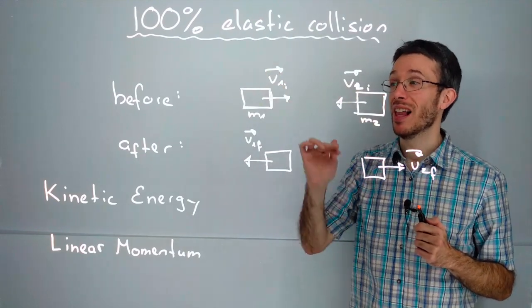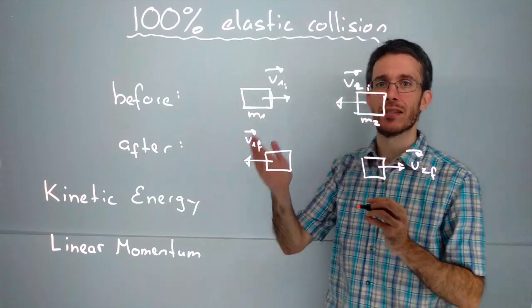A classical example would be pool billiard when two balls collide. Now in a 100% elastic collision, kinetic energy is conserved.